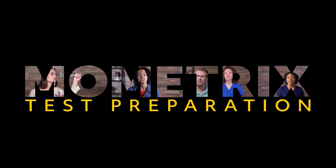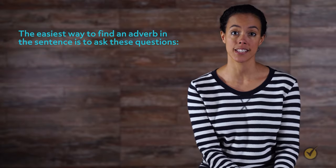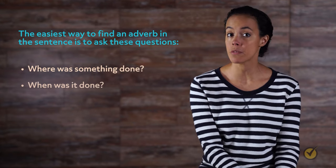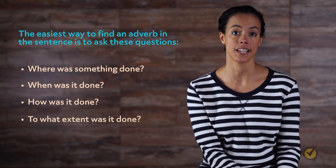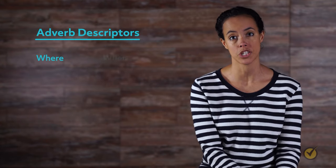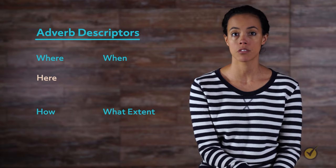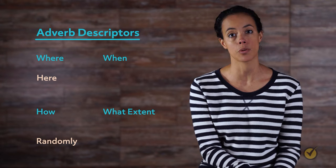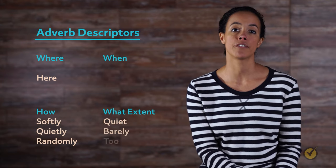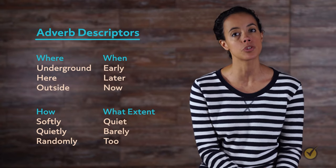Describing situations in detail helps readers more vividly understand what is taking place. When describing things in more detail, adverbs are a helpful addition to make your sentences more colorful. The easiest way to find an adverb in a sentence is to ask: Where was something done? When was it done? How was it done? And to what extent was it done? An adverb will always answer one of those questions. The adverb here answers where, and the adverb randomly answers how. An easy identifier for adverbs is the suffix ly — not all adverbs use it, but the majority do.